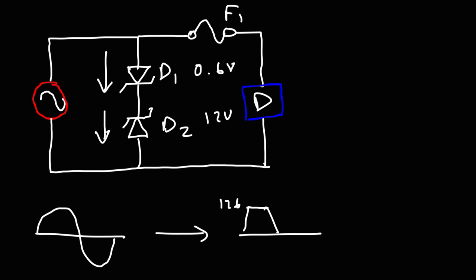Now let's consider the other direction. Because when dealing with alternating current, the current can reverse many times in a second. So as the current flows this way, through D2, it's in forward bias mode. The voltage drop is 0.6. And as it flows through D1, it's in reverse bias mode. The voltage drop is 12.